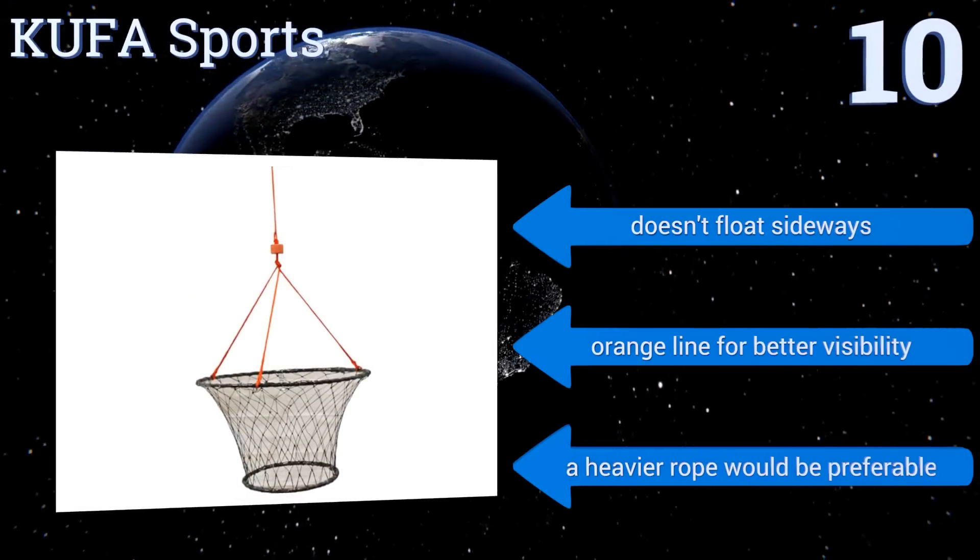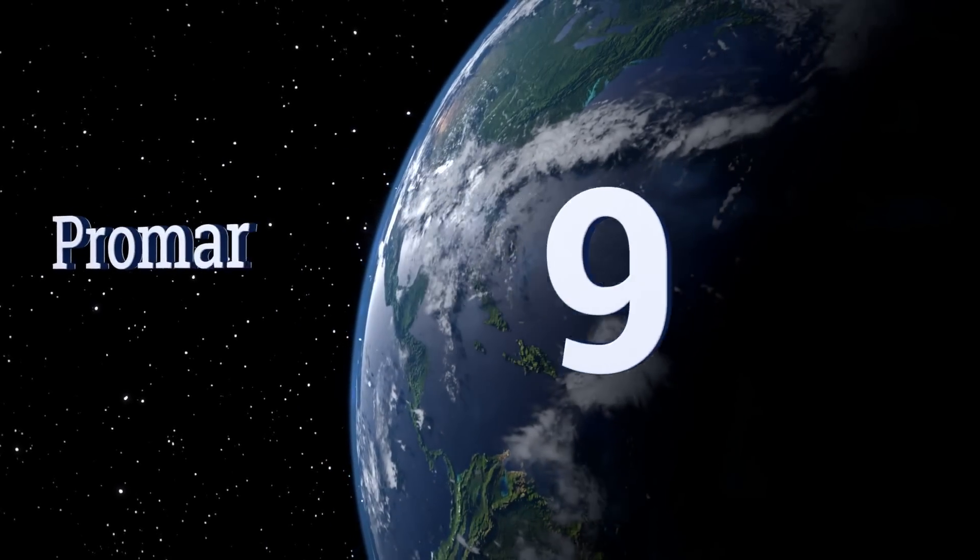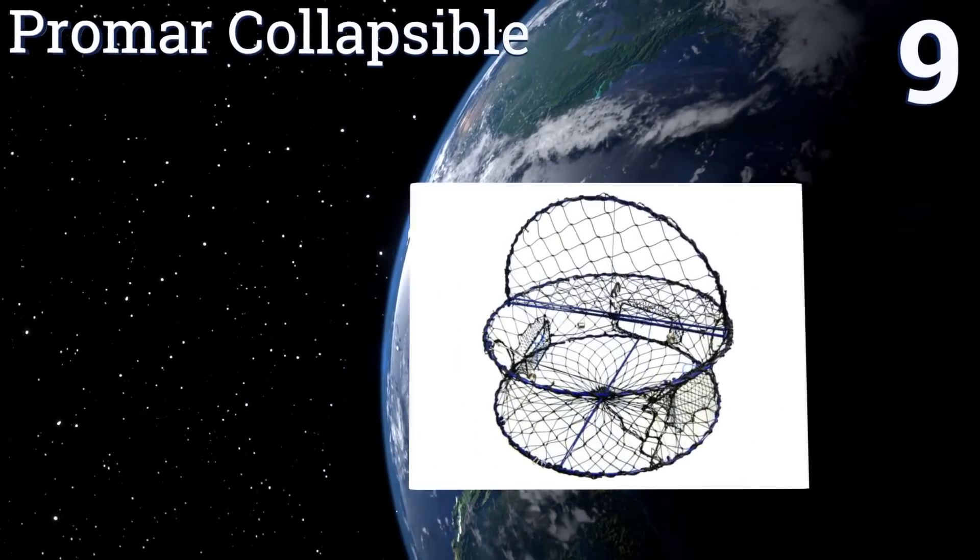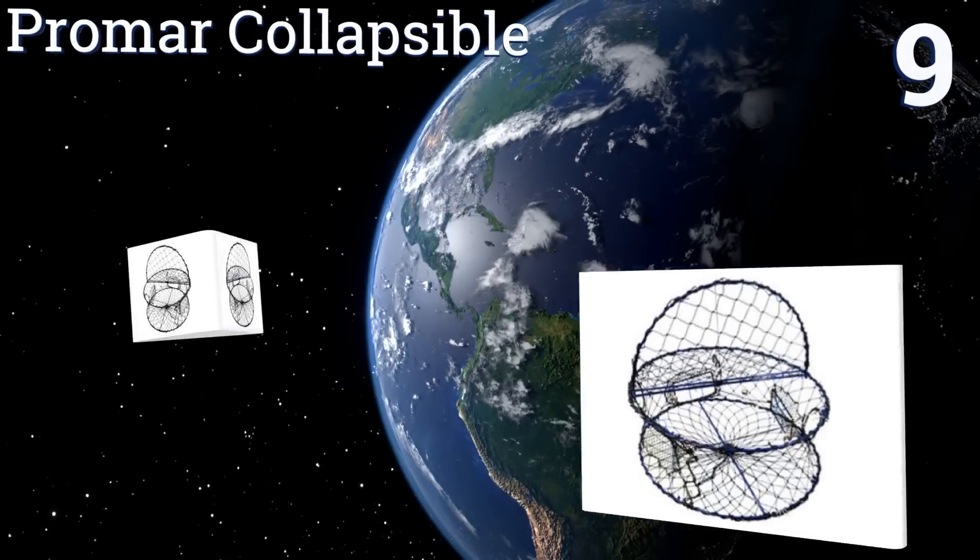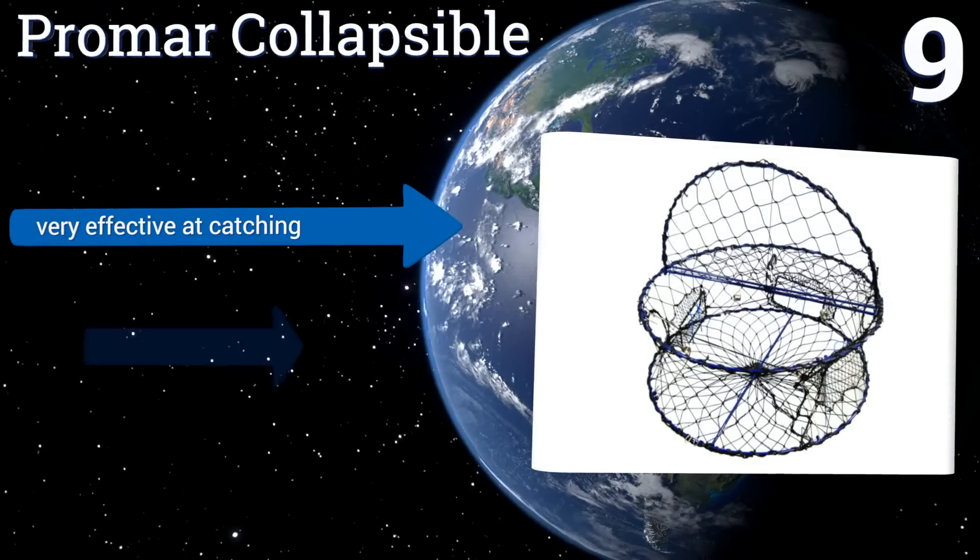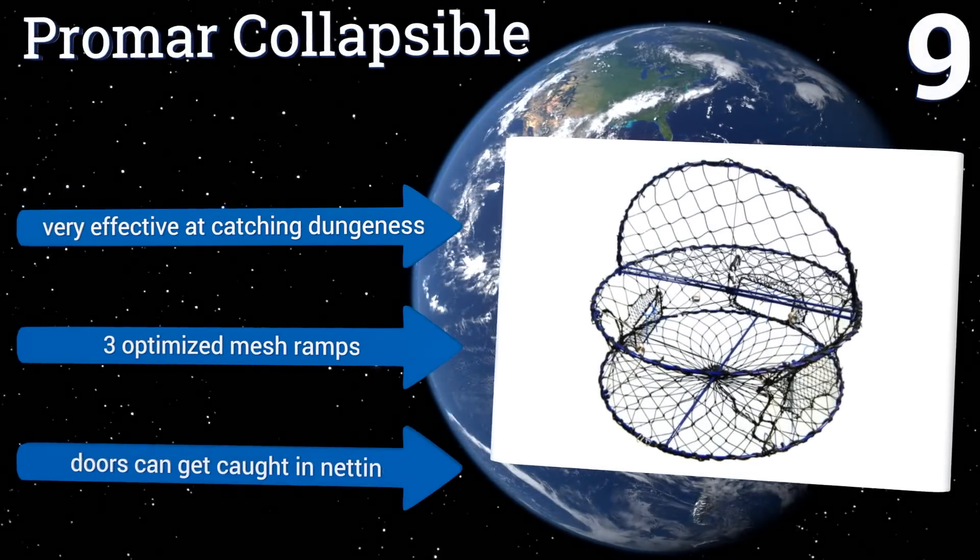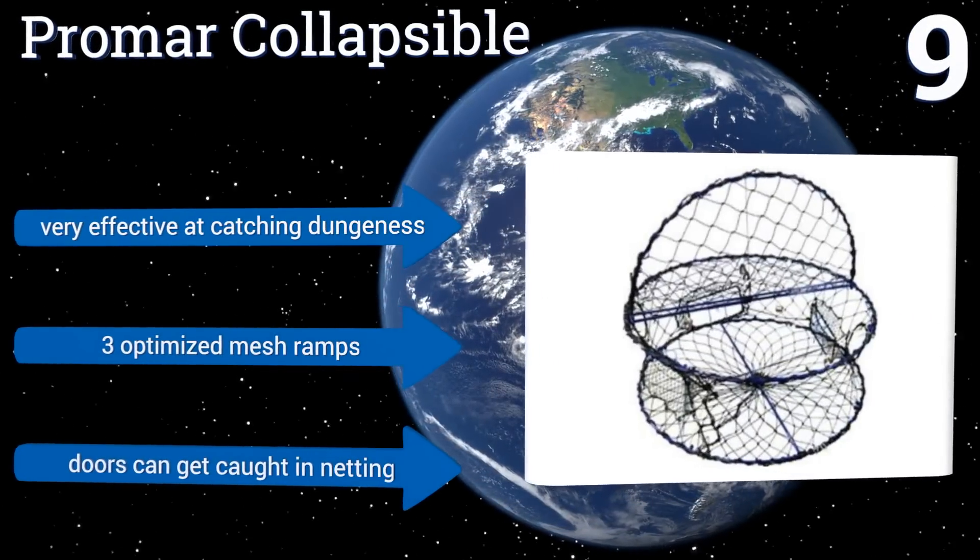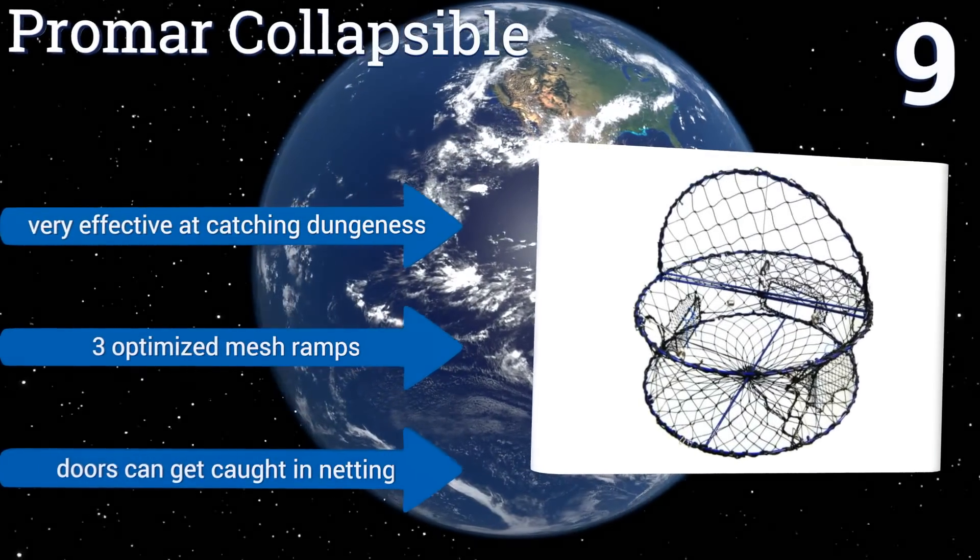At number nine, this Promar collapsible is specifically designed to be legal for use in Alaska. They collapse down to less than two inches, so they're perfect if space is at a premium. They have a tendency to come open in rougher waters however, so you may have to tie them down somehow. They're very effective at catching Dungeness crabs and include three optimized mesh ramps, but the doors can get caught in netting.